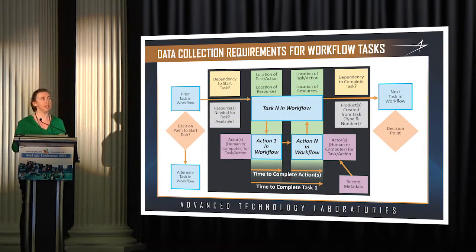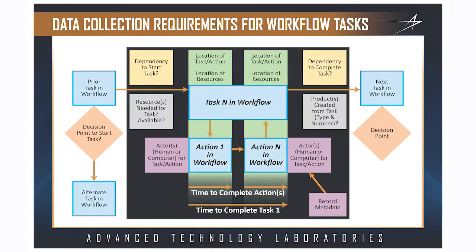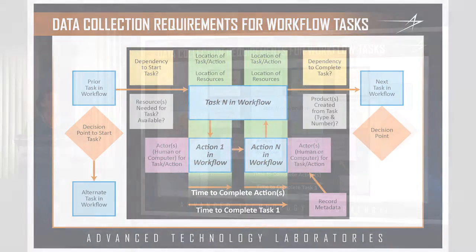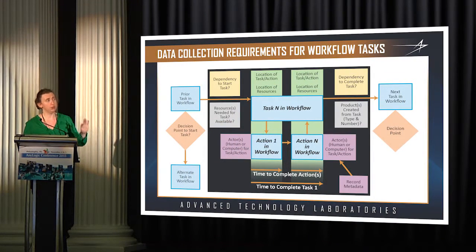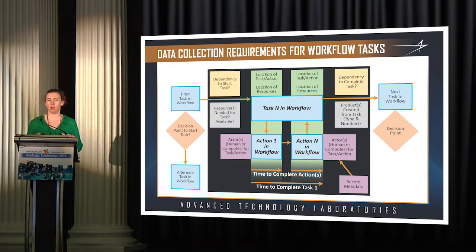In any given situation for turning around an airplane, you have three main components: the airplane, the people, and the workstations or machines. This shows a flow of the three interacting together.